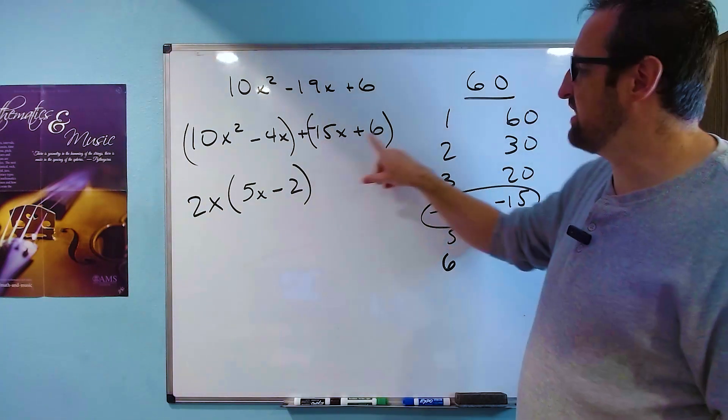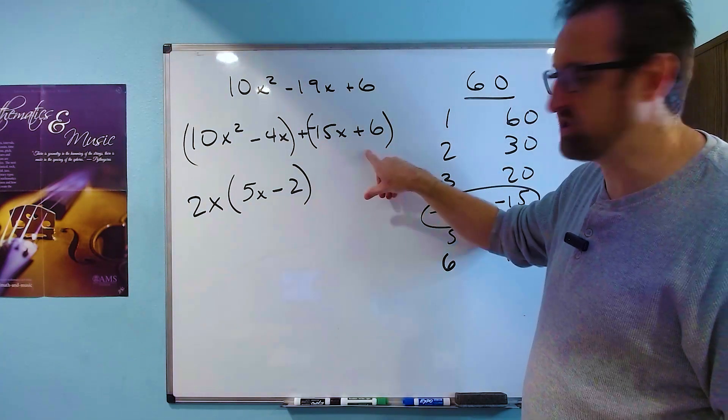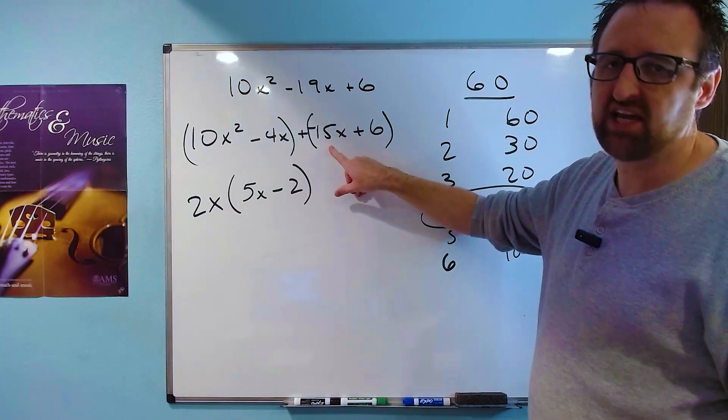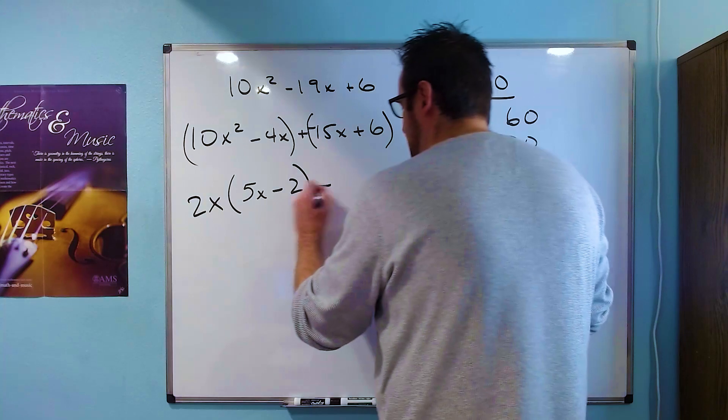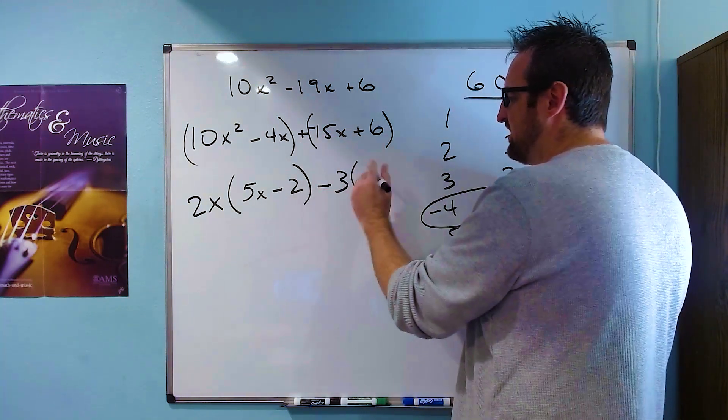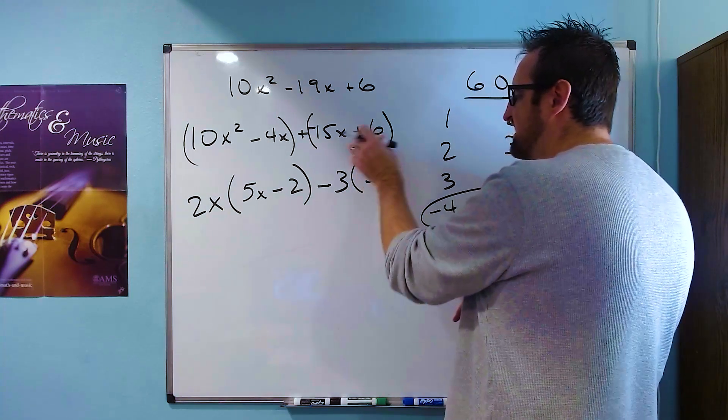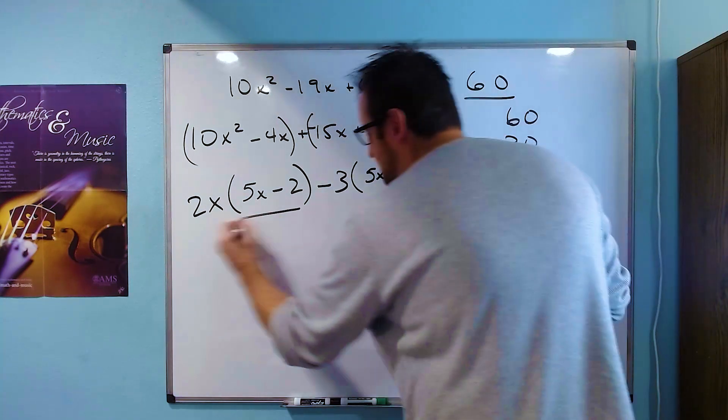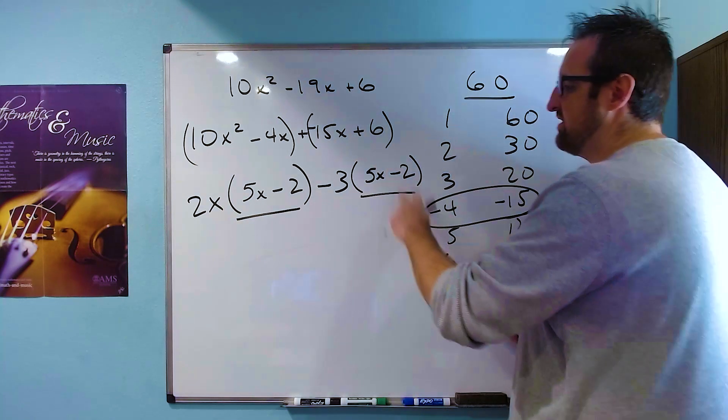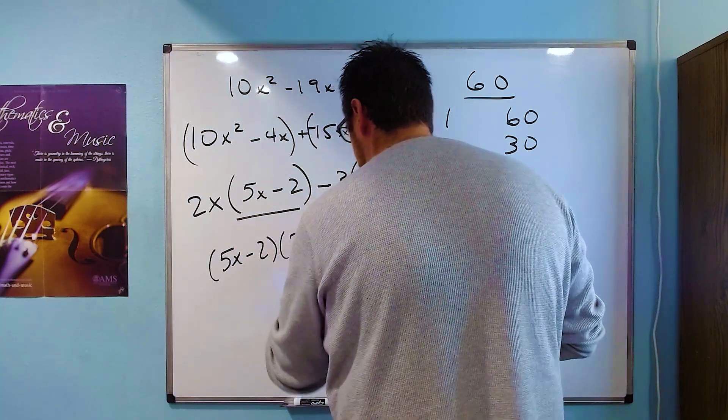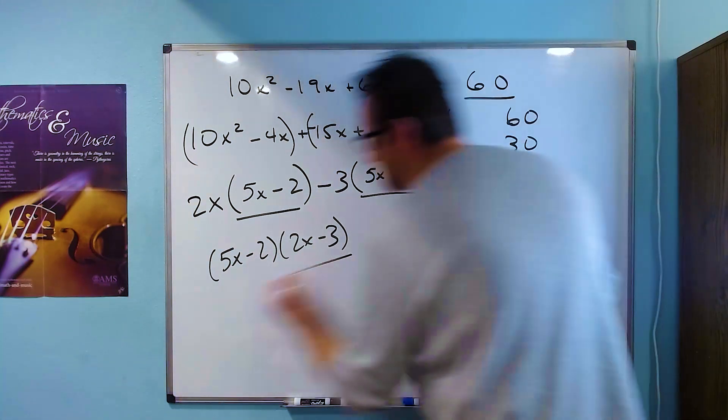And then to do this second one, we notice that they both have a factor of 3 in the coefficients. But we need the first term to be positive so it'll match this one. So we'll take out a negative 3. Negative 15x divided by negative 3 is 5x, and 6 divided by negative 3 is negative 2. And so, once again, we see that we have the same terms. We factor those out. Then we get (5x - 2)(2x - 3). And that's the factored form.